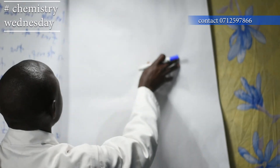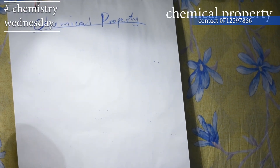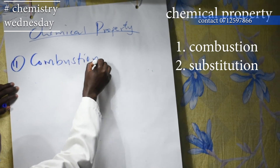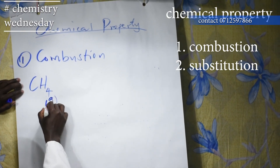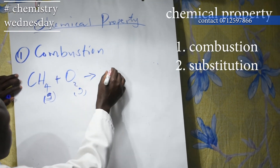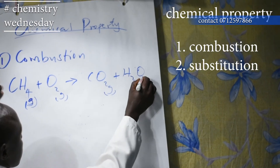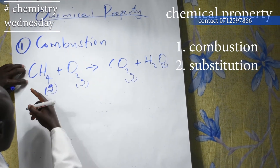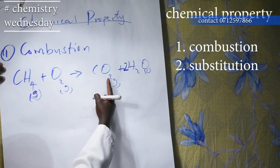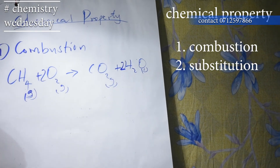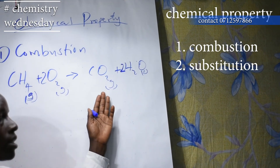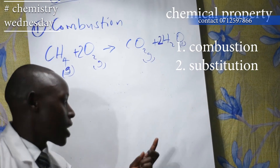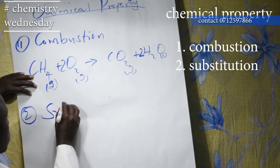Next is the chemical properties. Alkanes have two chemical properties. Number 1 is combustion: methane gas burns in oxygen to form carbon dioxide gas and water. CH4 plus O2 gives CO2 and H2O. So all alkanes undergo the same combustion reaction when heated — all organic compounds when burnt give carbon dioxide and water, the only difference being the balancing.